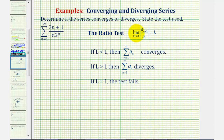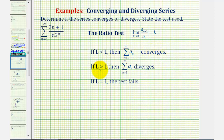To apply the ratio test, we find the limit as n approaches infinity of the absolute value of a sub n+1 divided by a sub n. Based upon this value, we can determine if the given series converges, diverges, or if the test fails. If L is less than one, the series converges. If L is greater than one, the series diverges. And if L equals one, the test fails and we have to apply a different test.